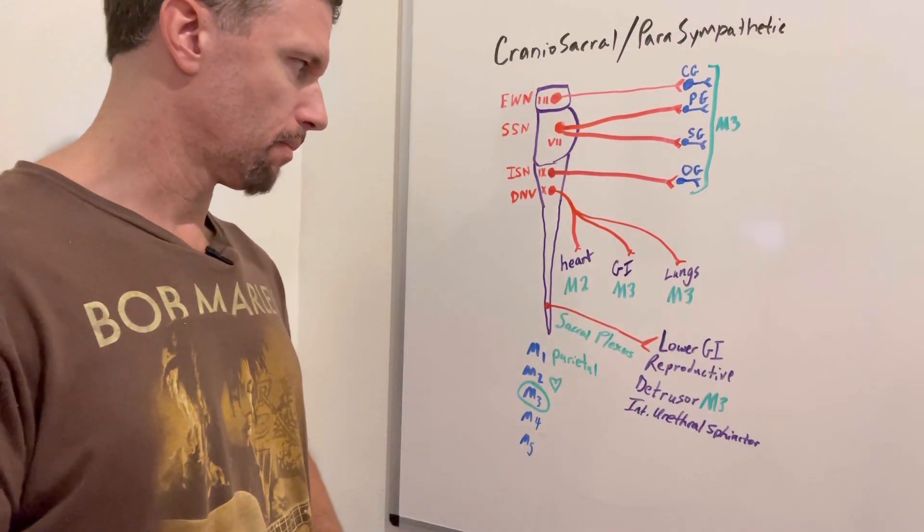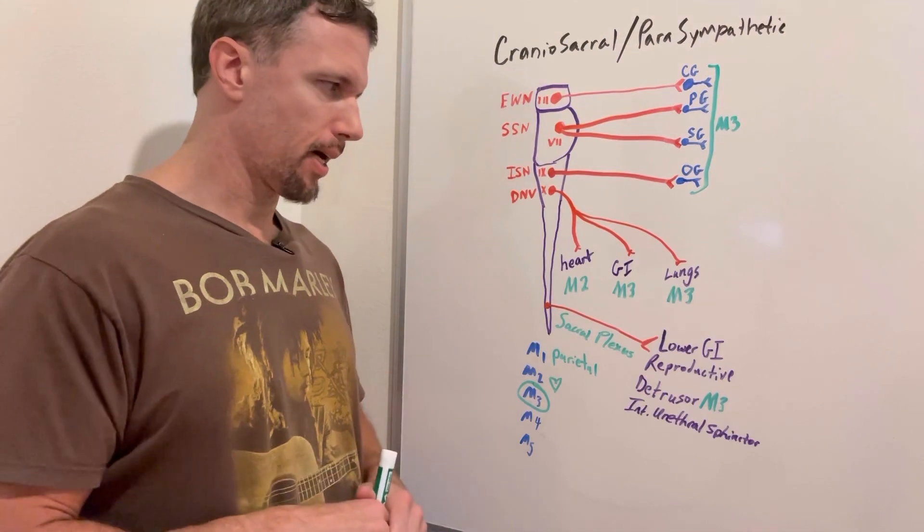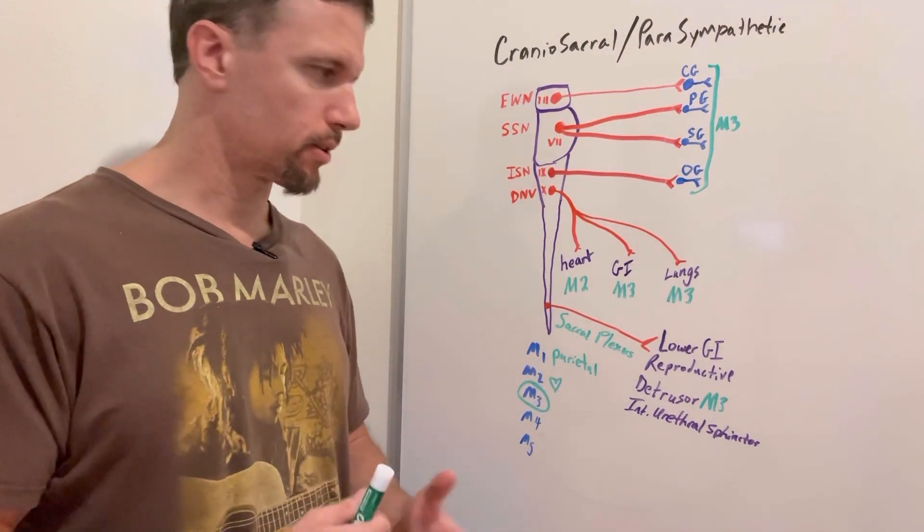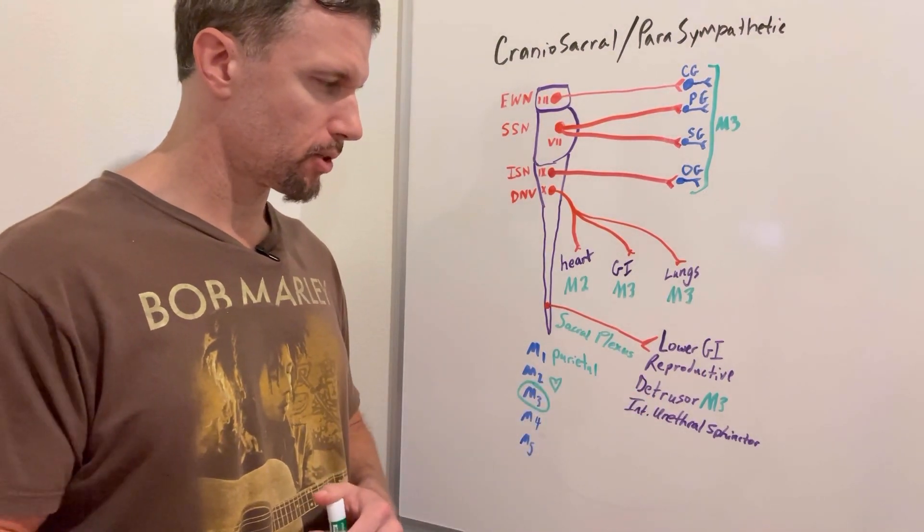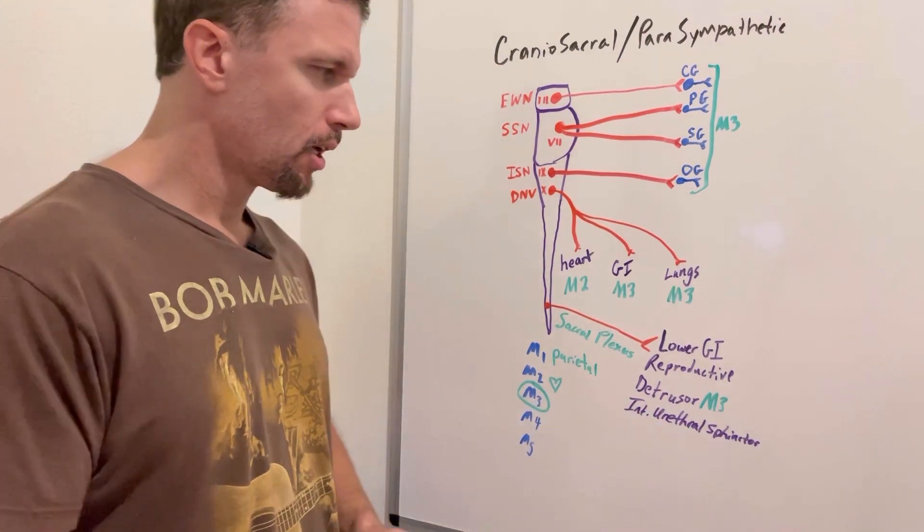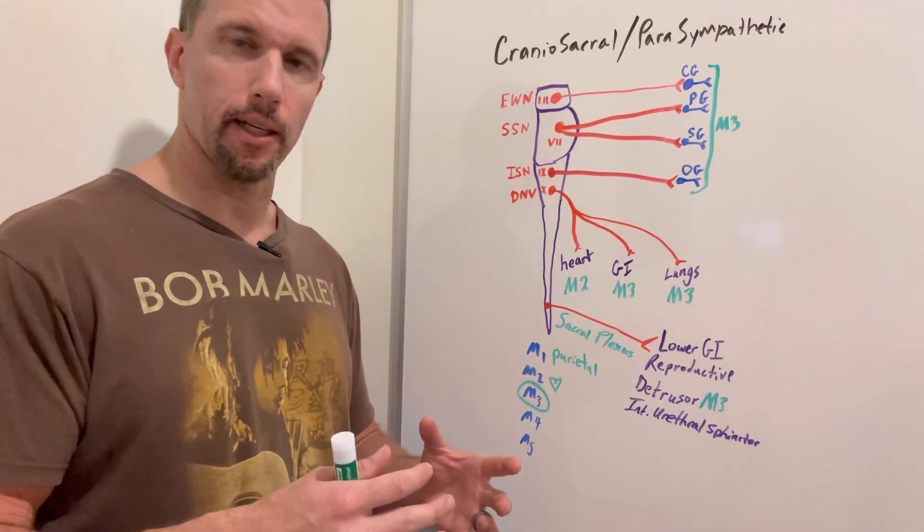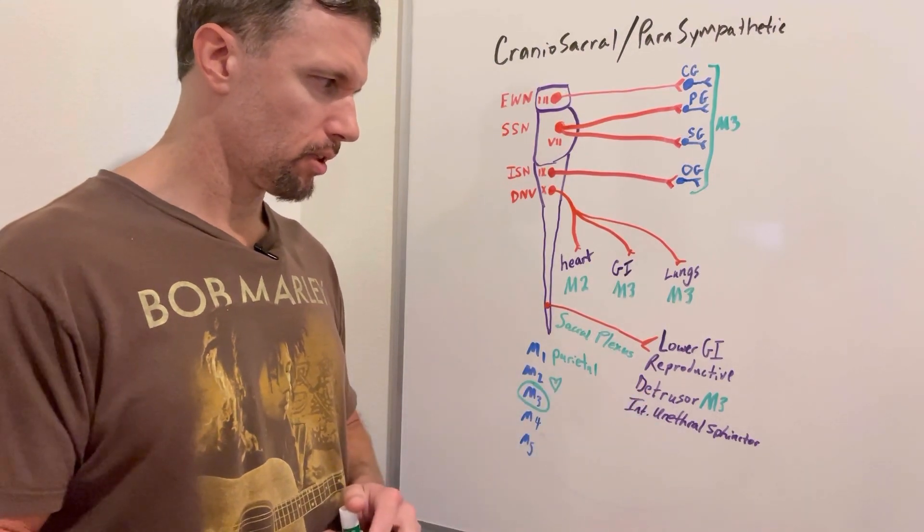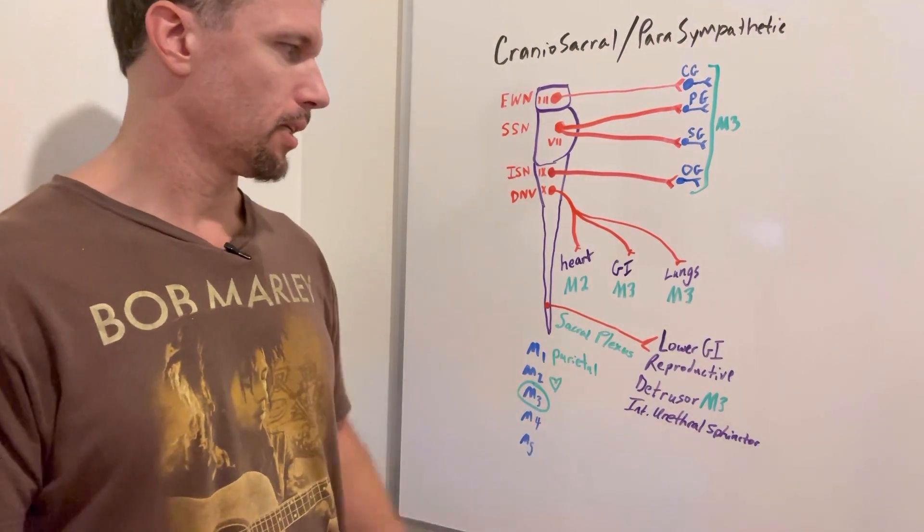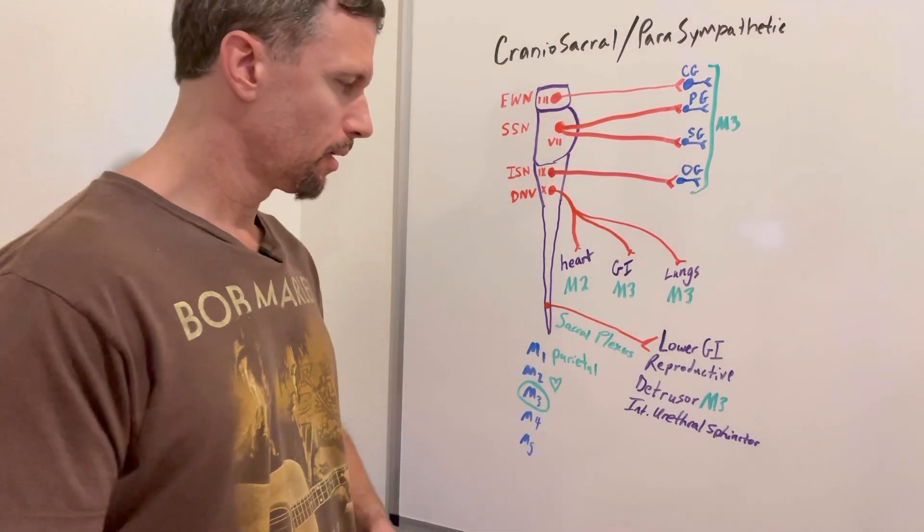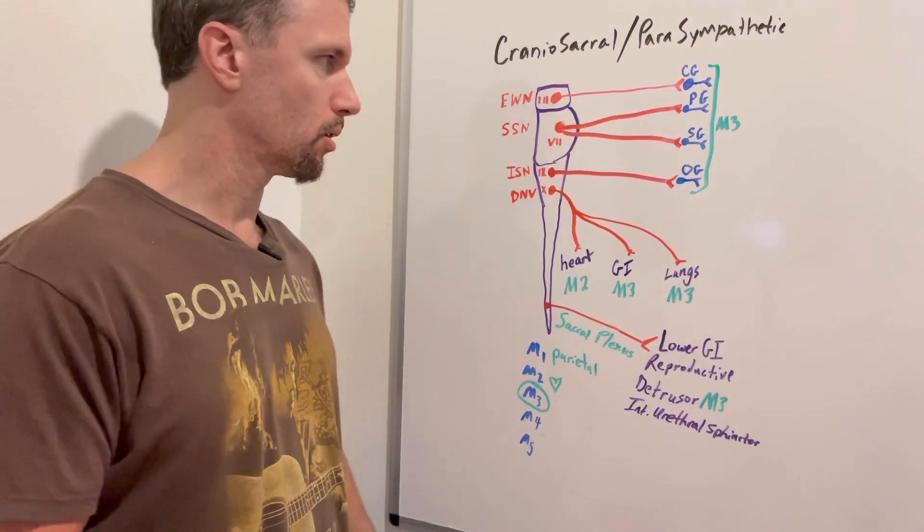If we go down to the bottom, you have the sacral plexus and that gets everything in the very lower end of the body: the lower part of the GI tract, maybe the sigmoid colon and rectum, the reproductive organs, and the bladder where we have the detrusor muscle and the internal urethral sphincter. It's going to facilitate urination. The internal urethral sphincter will cause relaxation there, and the detrusor muscle will cause constriction, a squeeze of the bladder to facilitate urination. That's M3 muscarinic receptor. Those come from the sacral plexus with preganglionic fibers that have a postganglionic fiber closer to the organ.